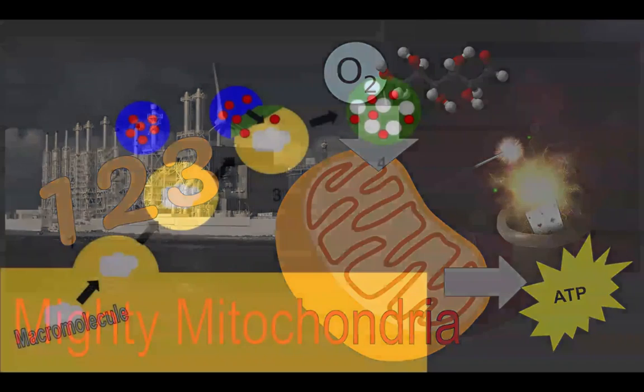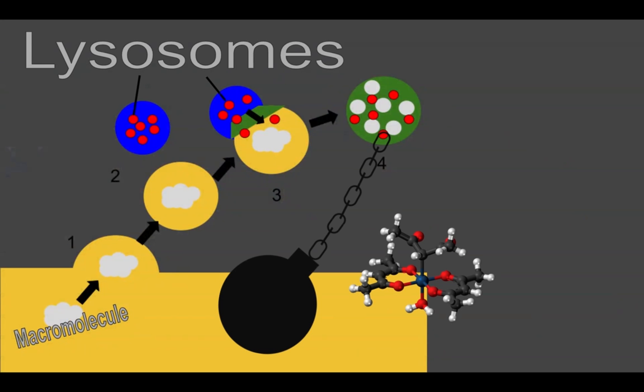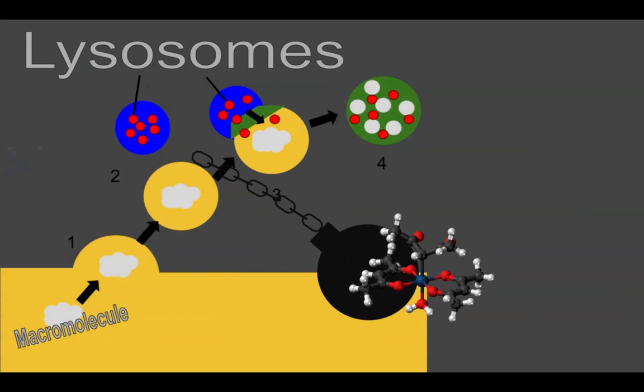If a macromolecule would be giving you fits, you know the lysosomes will break it into smaller bits. You got a complex sugar? Let me make a suggestion. Make it fit with demolition. Lysosome or digestion.